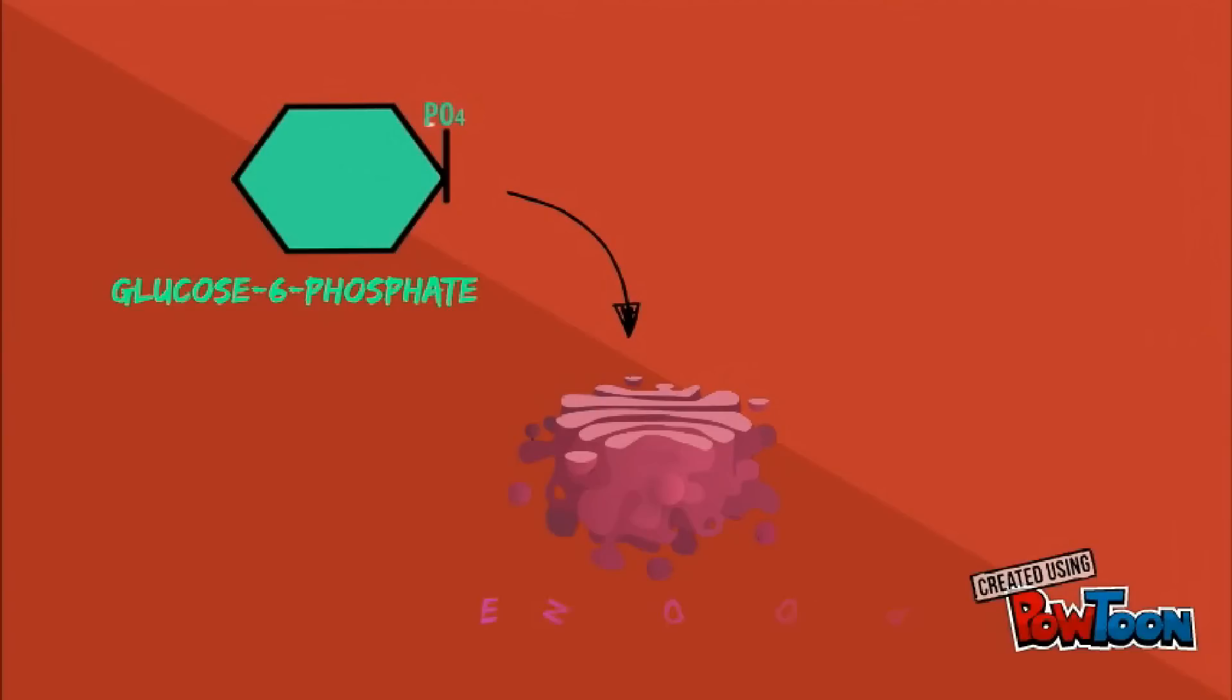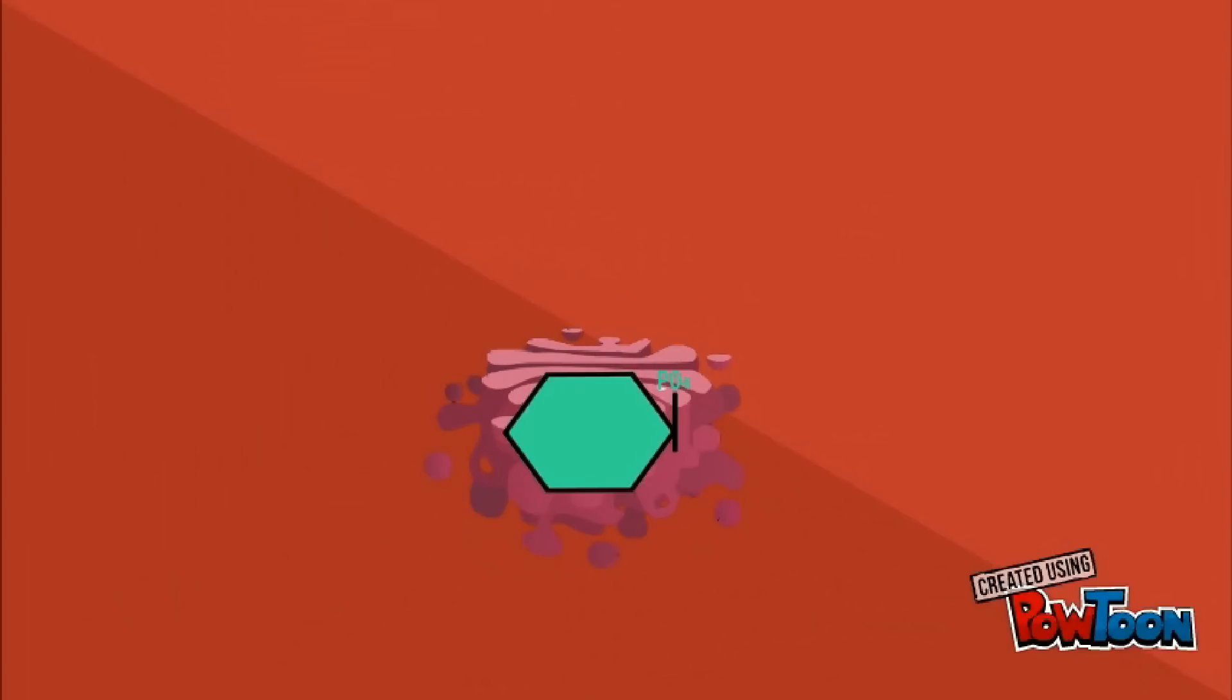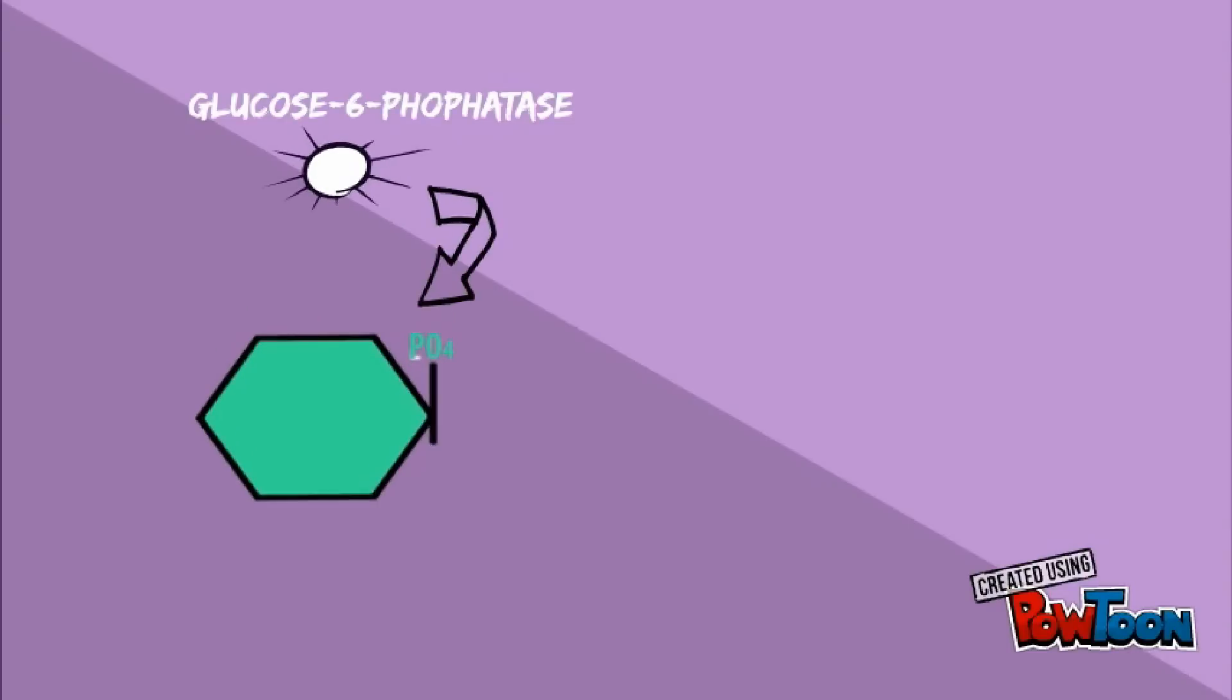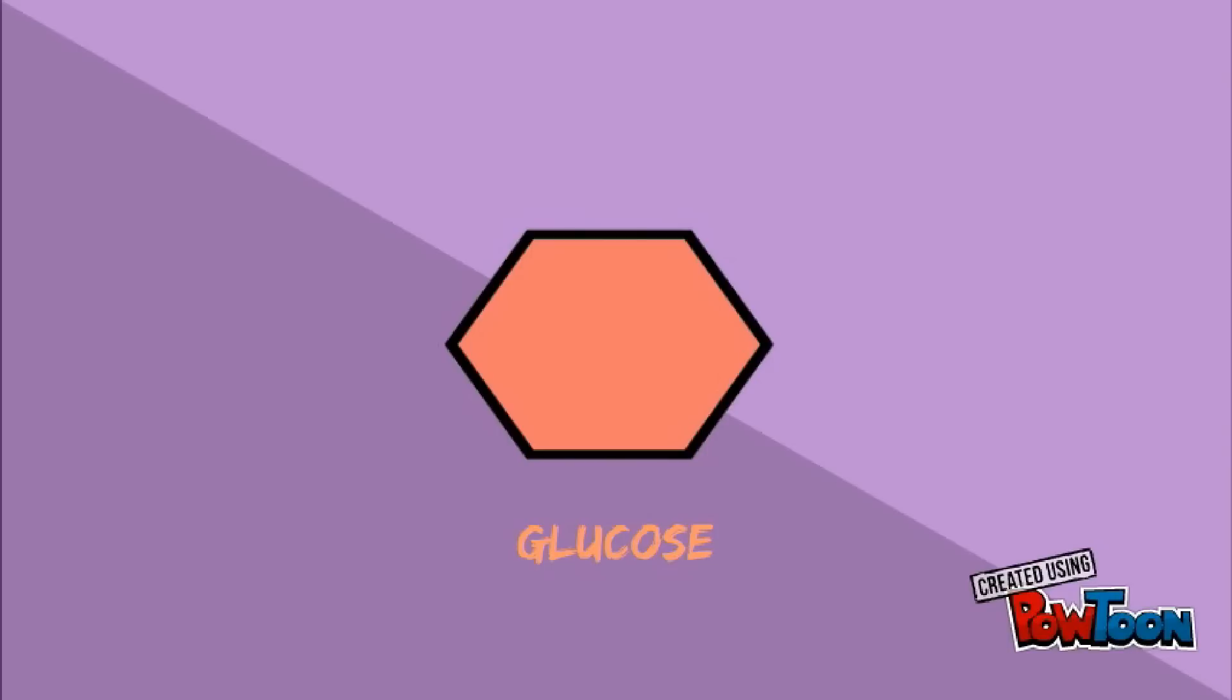In the liver, glucose-6-phosphate is transported into the endoplasmic reticulum by glucose-6-phosphate translocase. Here, the glucose-6-phosphate is converted to glucose via glucose-6-phosphatase. Hepatocytes release this glycogen-derived glucose into the blood to help maintain blood glucose levels.